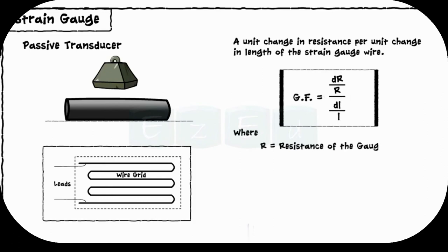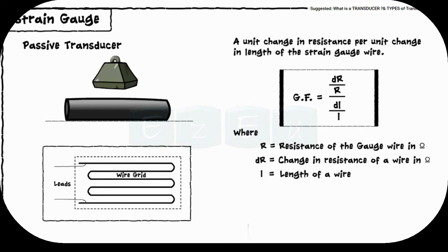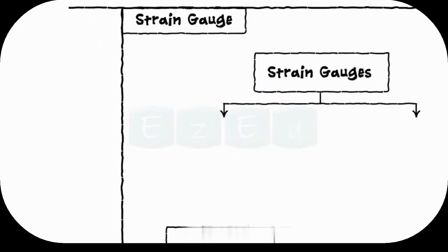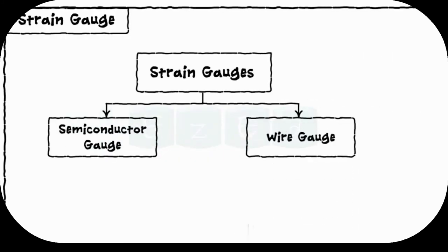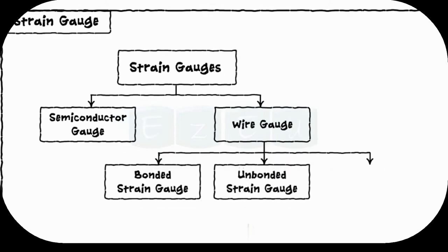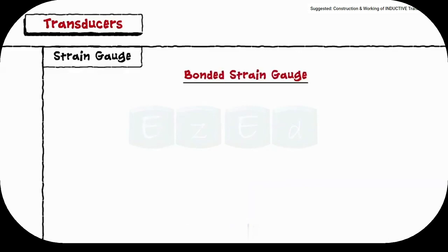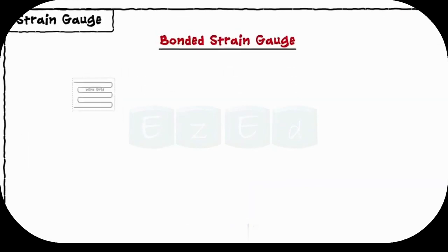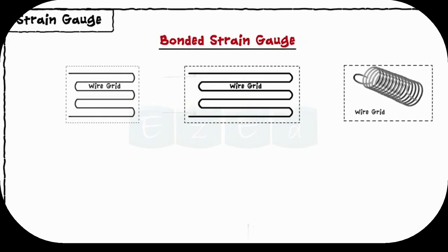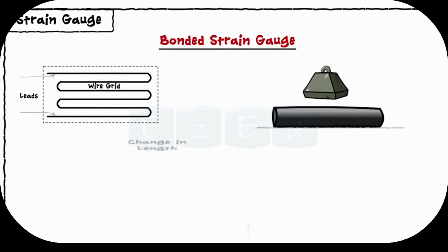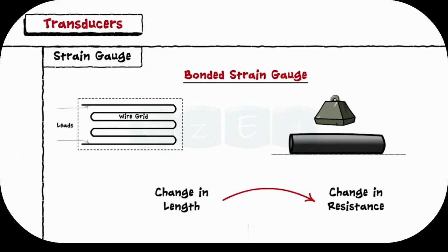Where R equals the resistance of the gauge wire in ohms, ΔR equals the change in resistance in ohms, L equals the length of the wire in the unstressed condition in meters, and ΔL equals the change in length in the stressed condition in meters. Strain gauges are mainly classified into two types: semiconductor gauge and wire gauge. Wire gauge is further subdivided into three types: bonded, unbonded, and foil type. We will focus on bonded strain gauges, which are bonded with cement to the surface. The shape of the wire grid can be square, rectangular, circular, etc., and it has two leads for external connections.